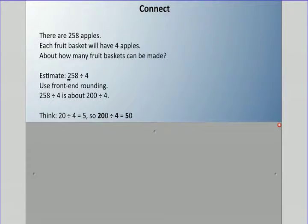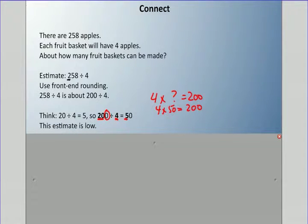Well, if we can do 20 divided by 4 equals 5, then 200 divided by 4 is 50. So here, 20 divided by 4 is 5, remember there's that extra zero. In other words, 4 times what equals 200? 4 times 5 is 20, we need an extra zero, so 4 times 50 is 200. That will work, but this really is a really low estimate.